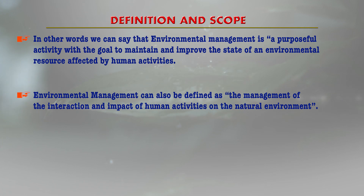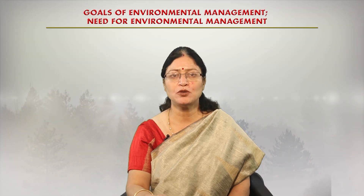It can also be defined as the management of the interaction and impact of human activities on the natural environment. The main aim of environmental management, besides protection of environment and natural resource management and conservation, is that it also ensures that ecosystem services and biodiversity are protected. They are maintained for equitable use for human generations, and it also helps in maintaining ecosystem integrity. It also takes into consideration various ethical, economical, social, and ecological variables.